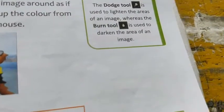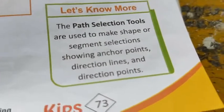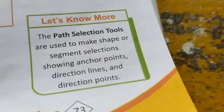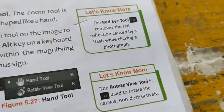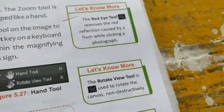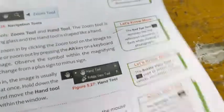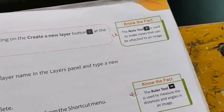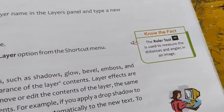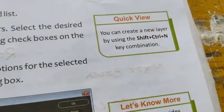The dodge tool is used to lighten an area of an image, whereas the burn tool is used to darken an area of an image. The path selection tool is used to show anchor points, direction lines, and direction points of a shape. The red eye tool removes the reflection caused by flash while clicking photographs. Rotate view is used to rotate the canvas non-destructively. The notes tool is used to make notes that can be attached to an image. The ruler tool measures distance and angle. You can create a new layer using Shift + Ctrl + N.